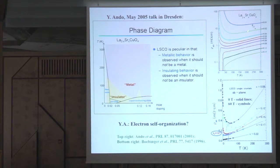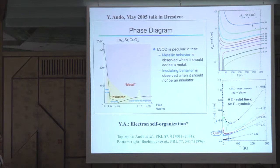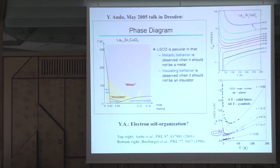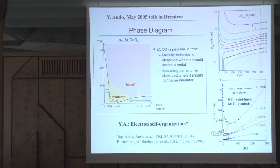The metallic behavior, as many people have believed, is observed for resistivities that are way too large for a 2D metal. It has also been known for many years that when these underdoped cuprates are placed in very high magnetic fields, this underlying insulating behavior is revealed. This emergence of insulating behavior takes place when the resistivity of the system is too low for it to be a 2D insulator. So basically, these systems are not just bad metals — they are also bad insulators.